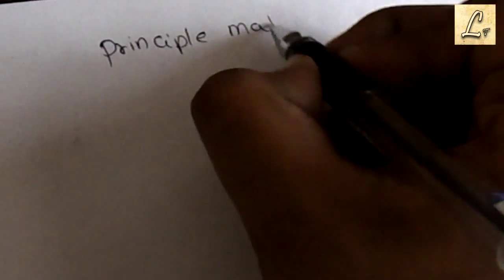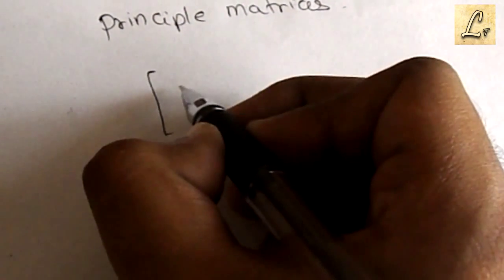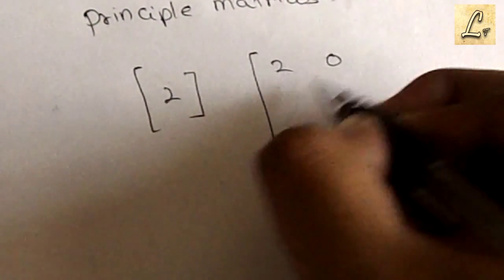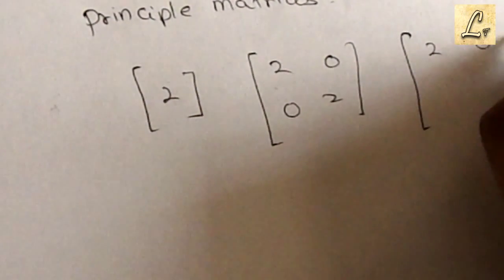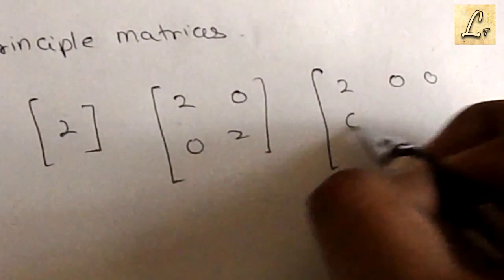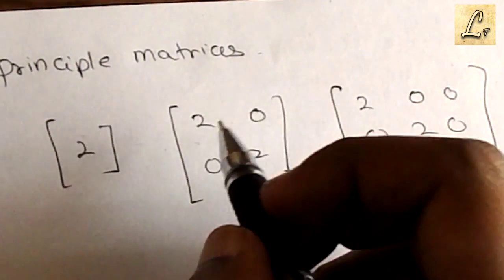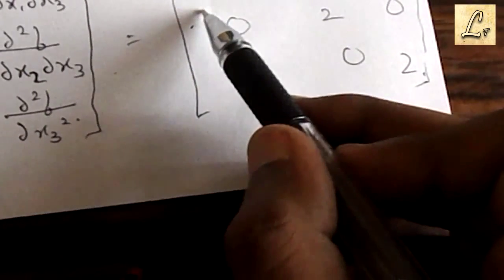Now for the principal minors, we'll get the first element as the first principal minor, the second principal minor is 2×2, and the third is 3×3.